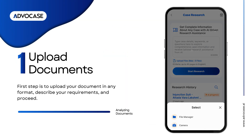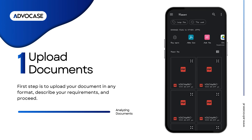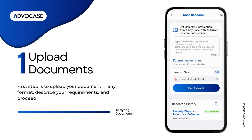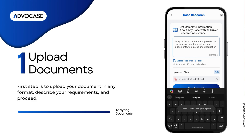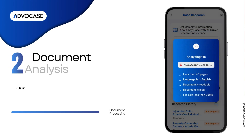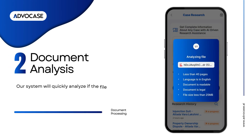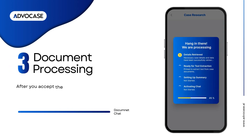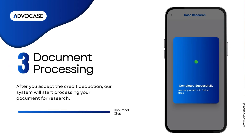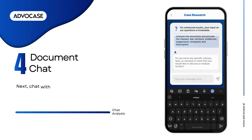The first step is to upload your document in any format, describe your requirements, and proceed. Our AI system will quickly check if the file is safe and meets the required conditions. After you accept the credit deduction, our system will start processing your document for research.